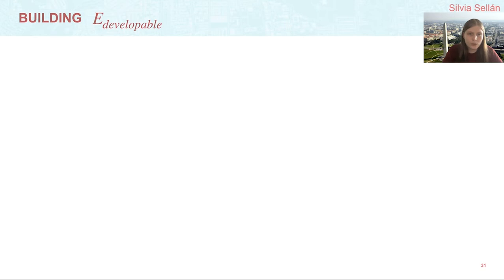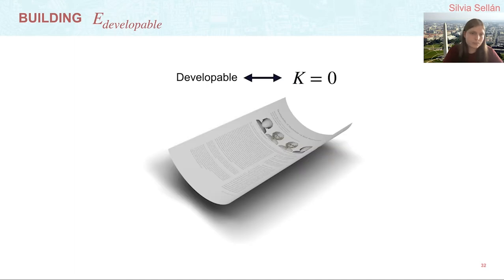Let's start with the first one. We want to build an energy that is lower the more developable a heightfield is. Let's begin with the most common definition of developability: a heightfield is developable if its Gaussian curvature is zero in every point.